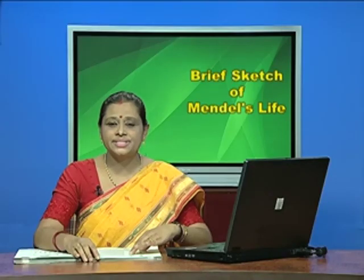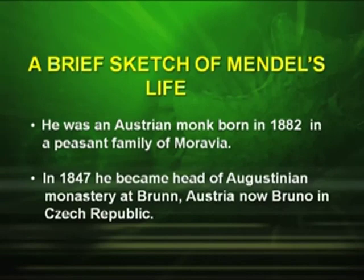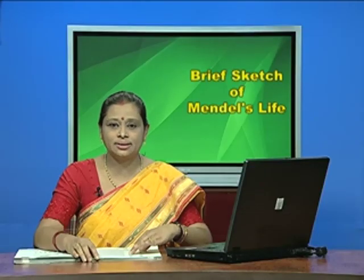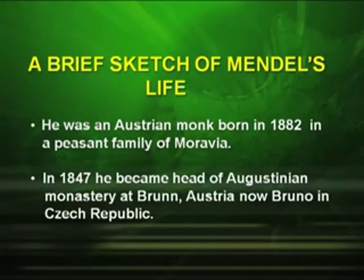Now, let us study the brief sketch — the life history of Mendel before we go into the details of Mendel's experiment. He was an Austrian monk born in 1822 in a peasant family of Moravia. In 1847, he became the head of Augustinian Monastery, Brünn, Austria, now Brno in the Czech Republic.